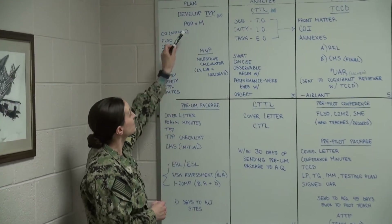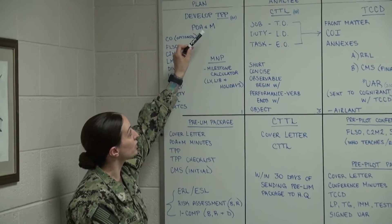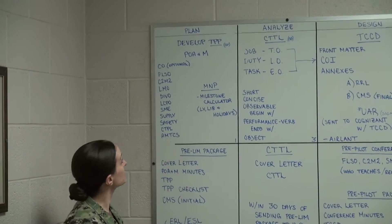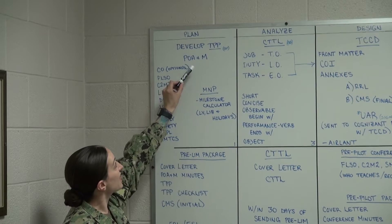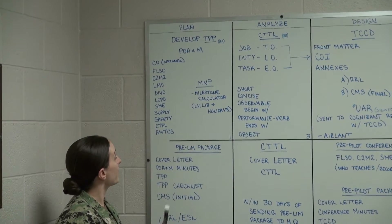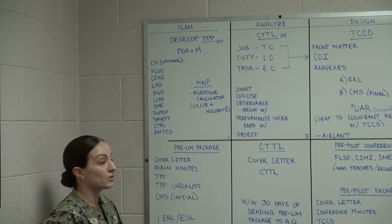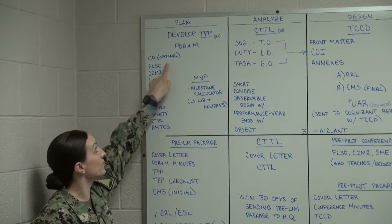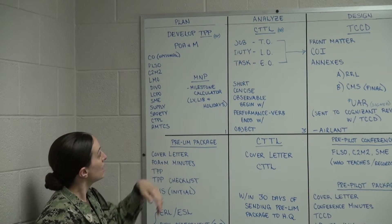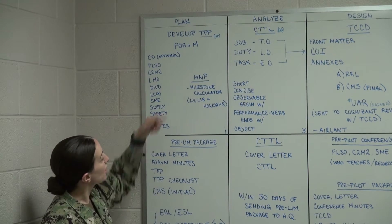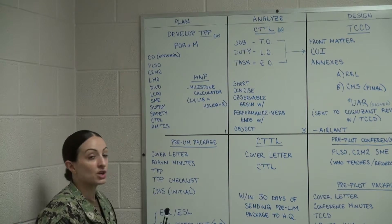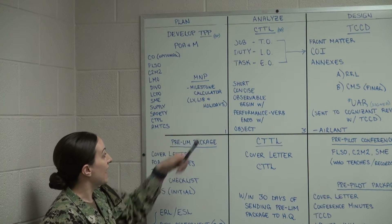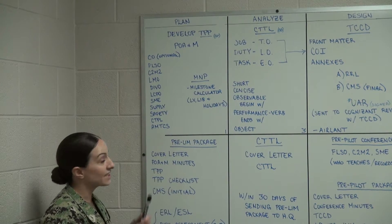In our Plan phase, we will develop our TPP — Training Project Plan — this is the blueprint for your course. We are going to conduct a POAM (Plan of Action and Milestones) with these 11 people being present; however, the CO will be optional. We're going to utilize our MyNavy Portal milestone calculator to keep in mind leave, liberty, and holidays when scheduling the POAM.